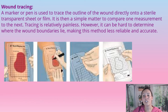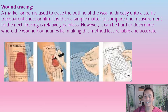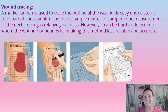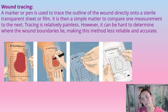Next we have wound tracing. A marker or pen is used to trace the outline of a wound directly onto a sterile, transparent sheet or film. It is then put onto a white sheet of paper so you can see it and track. It can be hard to determine the exact border when tracing, so it's not 100% accurate — every one of these methods has its faults. As long as everybody is consistently doing it the same way, we will be able to tell if the wound is getting smaller.